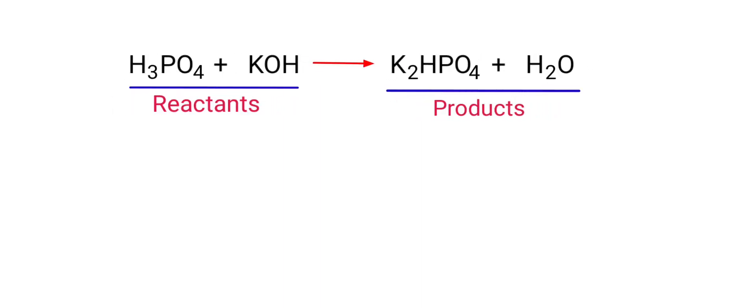In this equation, the reactants are phosphoric acid and potassium hydroxide, and the products are dipotassium hydrogen phosphate and water.